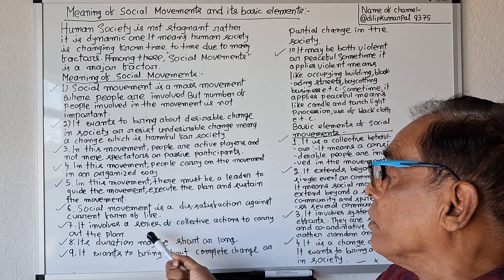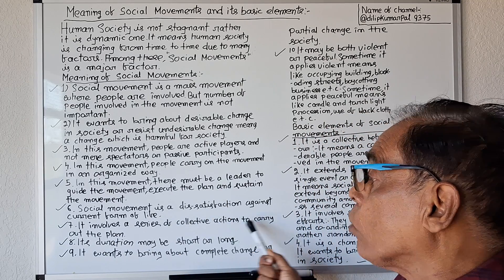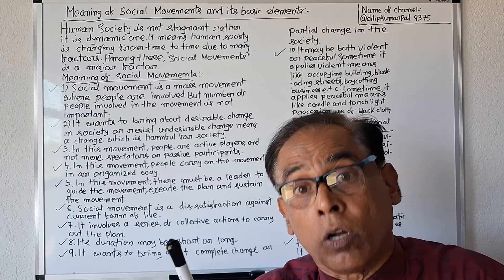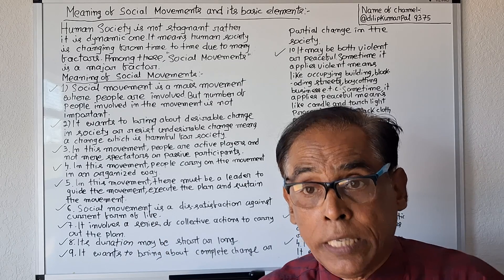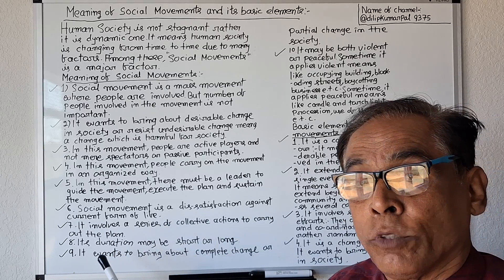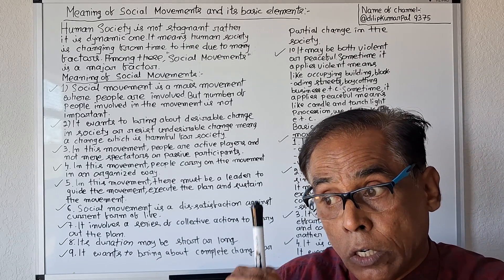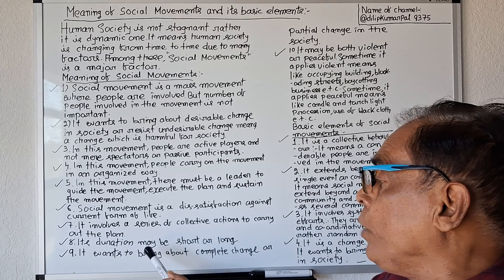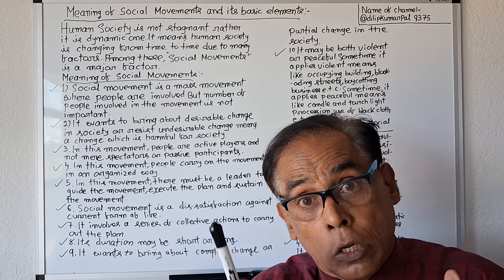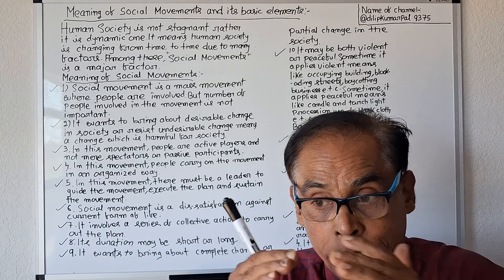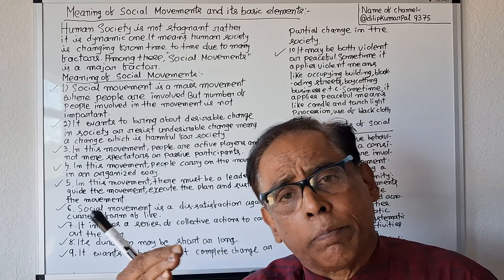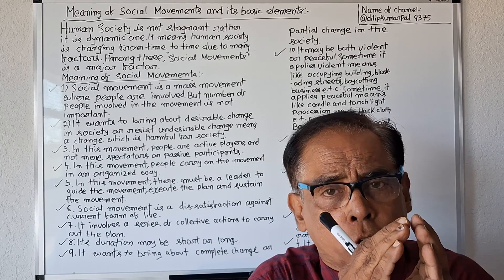Number seven: it involves a series of collective actions to carry out the plan. It does not apply only one action; it applies a series of collective actions to achieve the goal. Number eight: its duration may be short or long — within a short time or a long time, it will achieve the movement's objective.